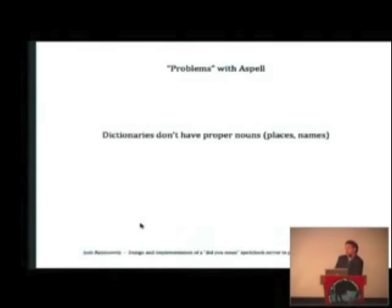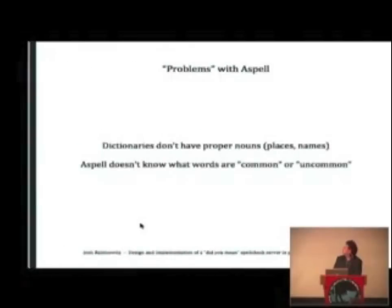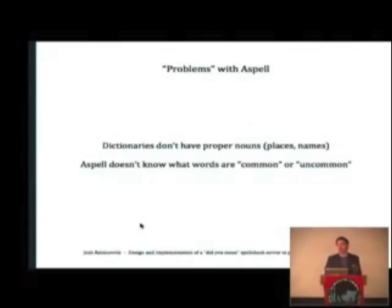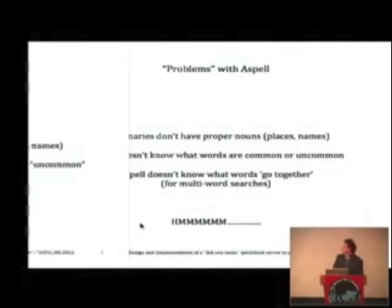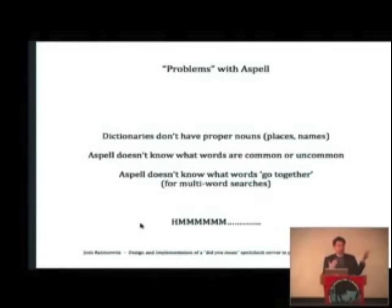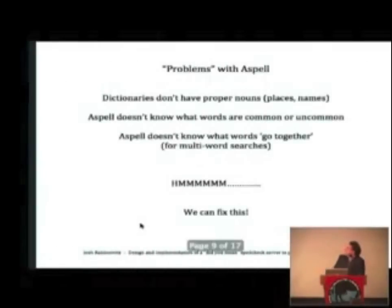So what are the problems? One problem is that the dictionaries that come with ASPEL don't have any proper nouns — the big ones being human names and place names. It also has no idea what words are common or uncommon. So if you type something very similar to an extremely uncommon word, it'll say you must have meant that word — but probably you didn't, because it's a very uncommon word. It also doesn't know what words go together, so it may suggest words that each make sense individually but are very unlikely to appear next to each other in a search.